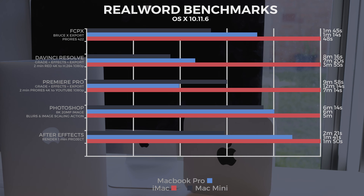Now on to the real-world benchmarks. We ran FCPX — the BruceX export — and the iMac did it in 48 seconds, about 30 seconds faster than the MacBook Pro. We then ran DaVinci Resolve with a two-minute RED file, graded with effects, and exported to H.264 at 1080p. The iMac took the clear lead, more than half the time quicker at 3:55, and the MacBook Pro came in second at 7 minutes 20.